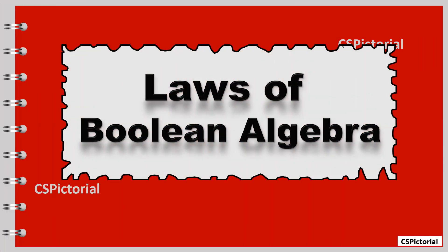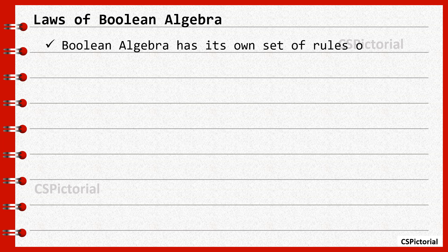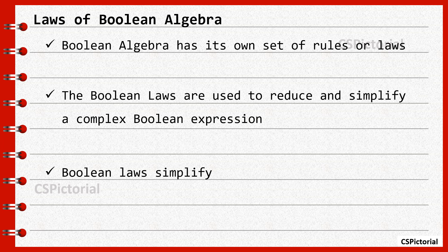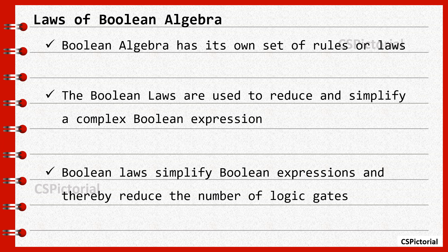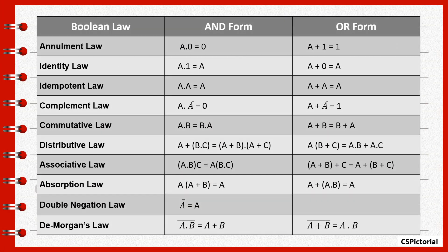Laws of Boolean algebra. Boolean algebra has its own set of laws. The Boolean laws are used to simplify a complicated Boolean expression and thereby reduce the number of logic gates required to implement the Boolean expression. This table lists the laws of Boolean algebra. Each of these laws are described with their corresponding logic gates and proved with the corresponding truth table.